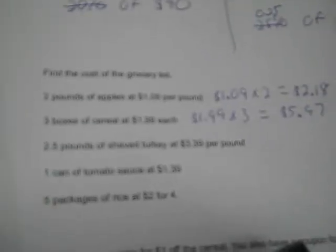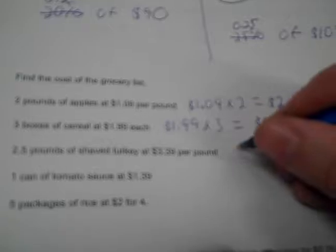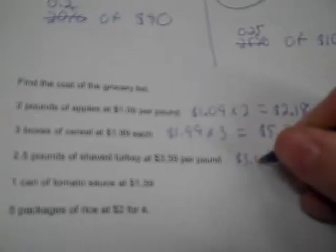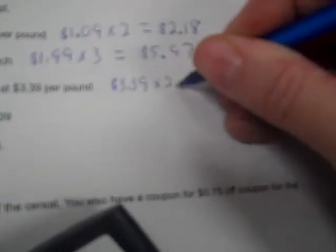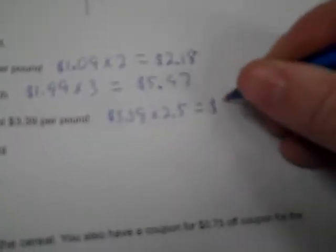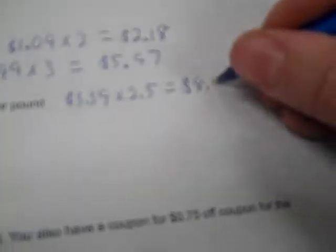Two and a half pounds of shaved turkey at $3.39 per pound. So you got $3.39 per pound, and there's two and a half pounds, so times 2.5. So $3.39 times 2.5 is $8.48. It's $4.48, it's $4.47, and then the five rounds it up. It goes up to $8.48.